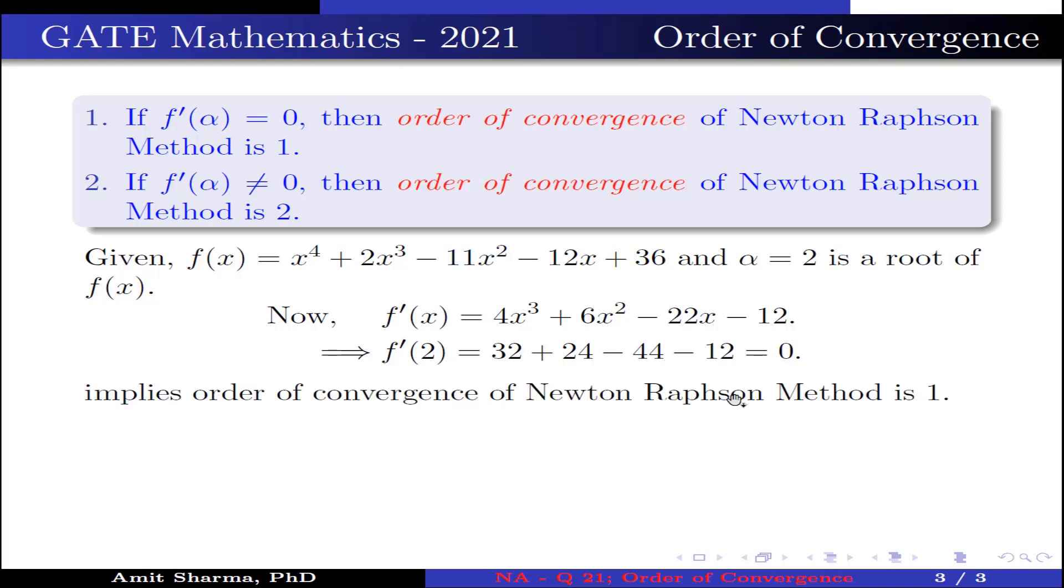This implies order of convergence of Newton-Raphson method is 1. Therefore order of convergence of Newton-Raphson method is 1.